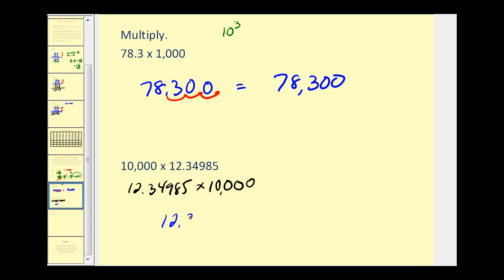Now we can just take 12.34985 and move the decimal place to the right four places, because there are four zeros in ten thousand. One, two, three, four. The decimal point will be between the eight and the five. And we should rewrite this as 123,498 and five tenths.